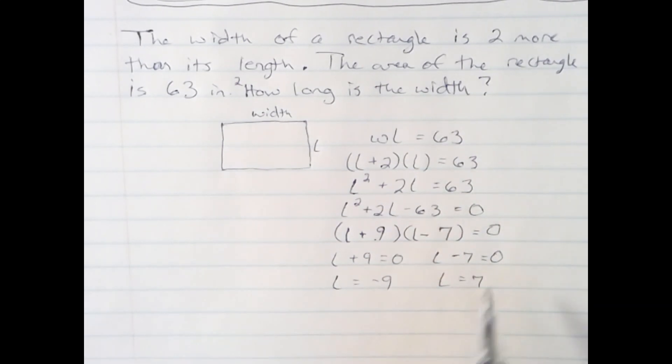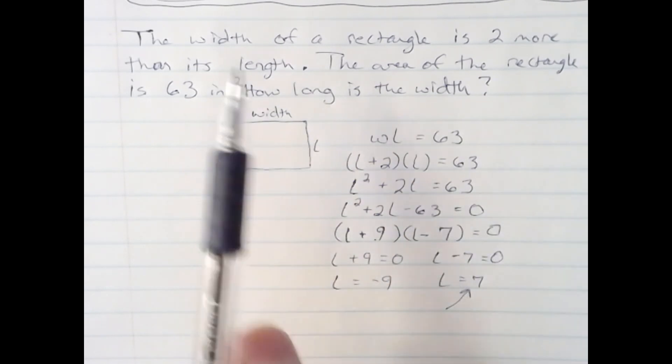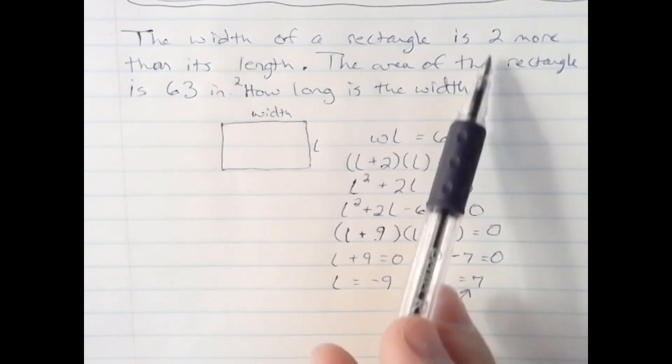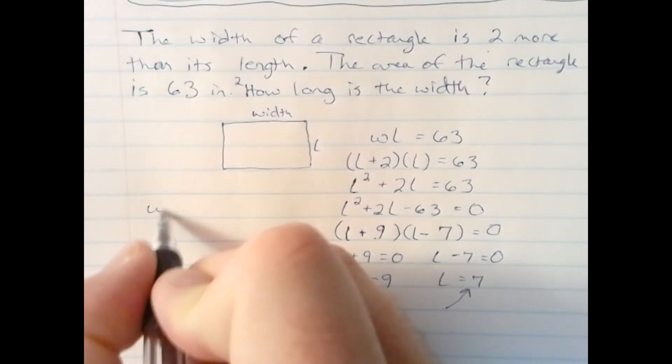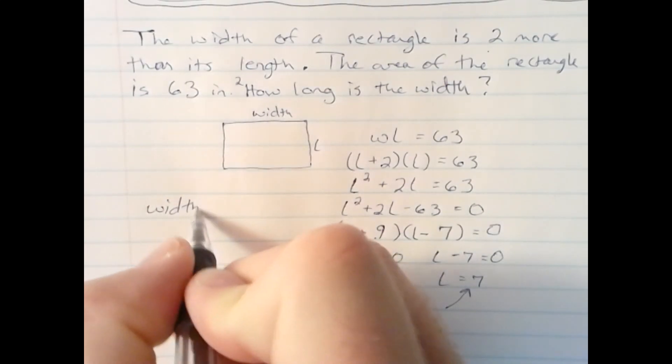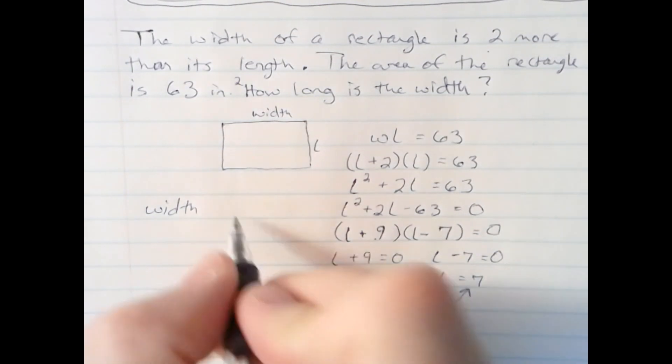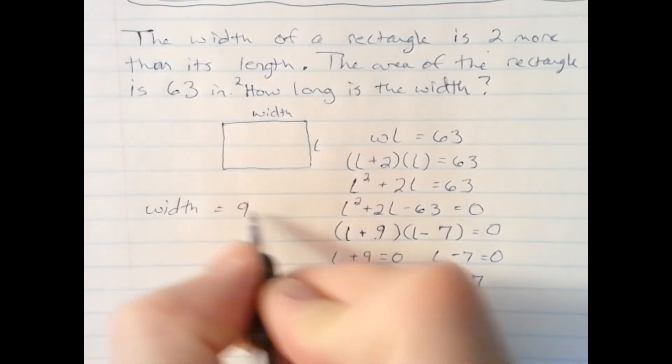Now, that is the value for my length. I solved for L. It said back in the problem, the width, what I'm after, is 2 more than L. 2 more than 7 is 9. Final answer, the width of the rectangle is 9 inches.